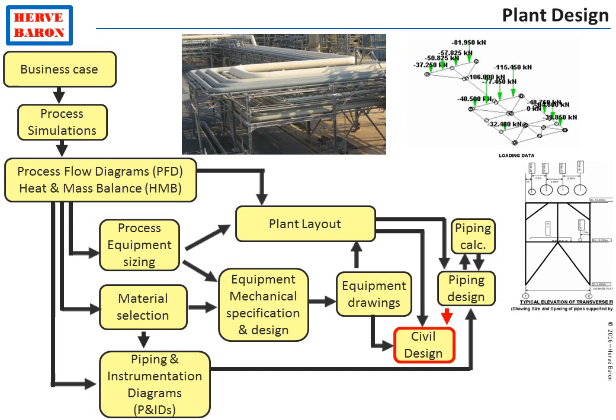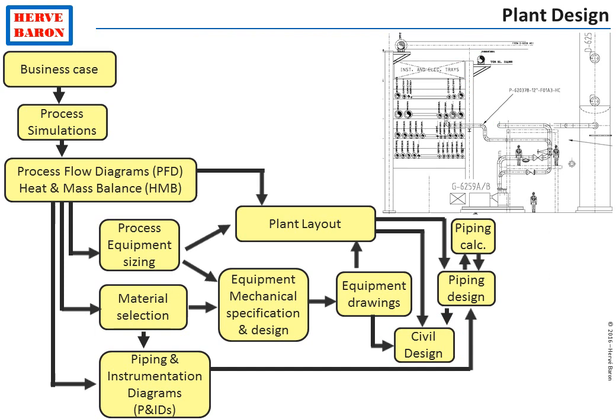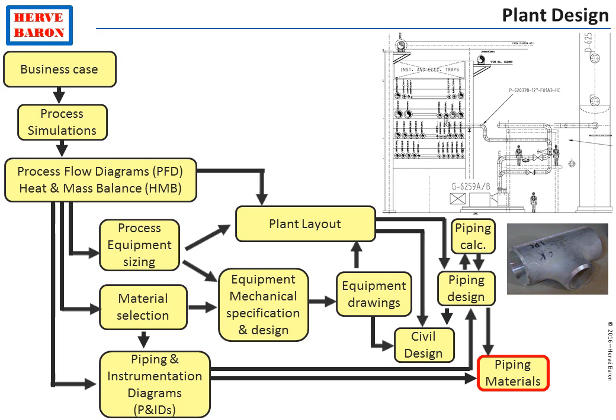Once piping calculations are completed and the required expansion loops are identified, the corresponding loads and geometry are given by piping to civil. Once the calculations have been completed and a significant amount of pipes have been routed in the 3D model, the piping material takeoff can be extracted from the model. This will allow the first set of piping materials to be purchased.